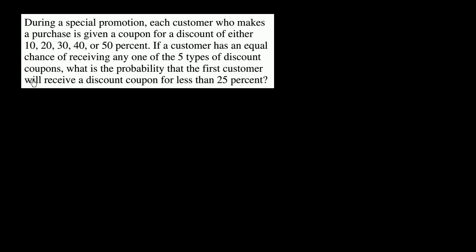So which of these discount coupons are less than 25%? Well, the 10% one is, and the 20% one is. So when we're thinking about the probability of having a discount coupon less than 25%, how many equally likely outcomes do we have? Well, we have one, two, three, four, five equally likely outcomes.